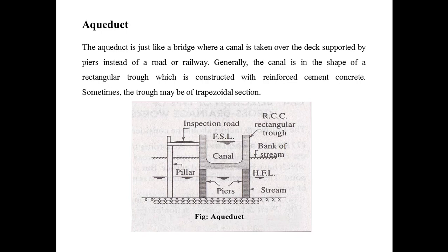Now coming to the aqueduct. The aqueduct is just like a bridge where a canal is taken over the deck supported by piers, instead of a road or railway. As you can see in the figure, a canal is taken over the deck which is supported by piers, as in the case of a road or railway. Generally, the canal is in the shape of a rectangular trough, constructed with reinforced concrete, but sometimes the trough may be of trapezoidal section. This trough is normally rectangular but according to the condition may be trapezoidal.